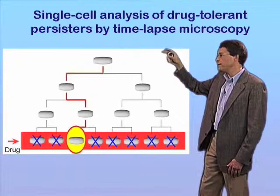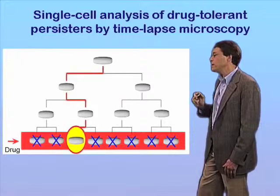We can now ask: is there anything that we can identify that's different about these cells, either before, during, or after the exposure of the drug, that causes them to be persisters when 99.9% of their siblings are not?